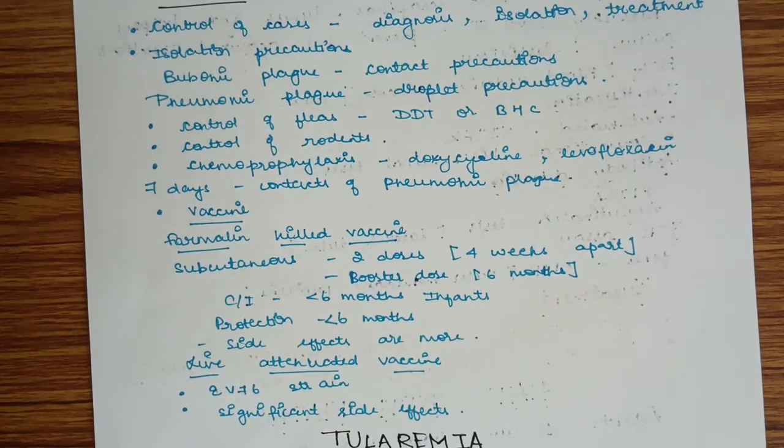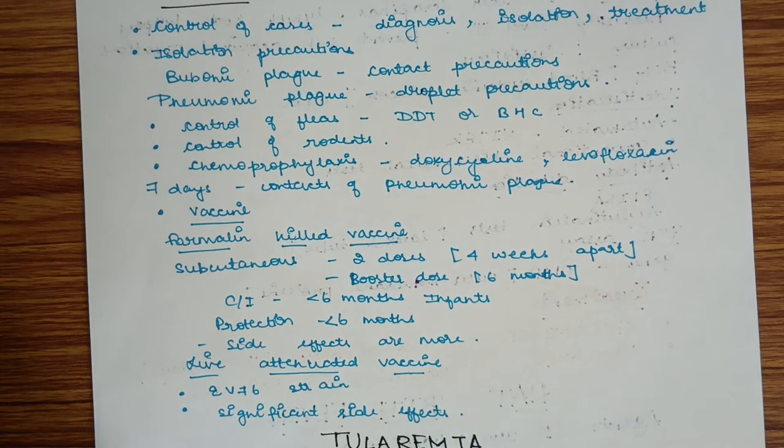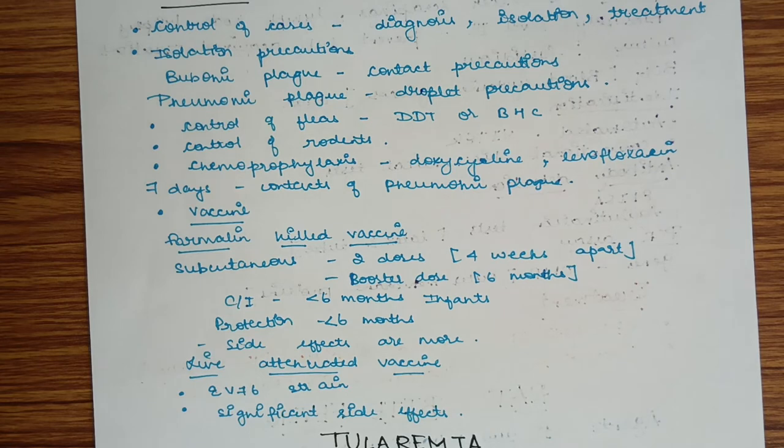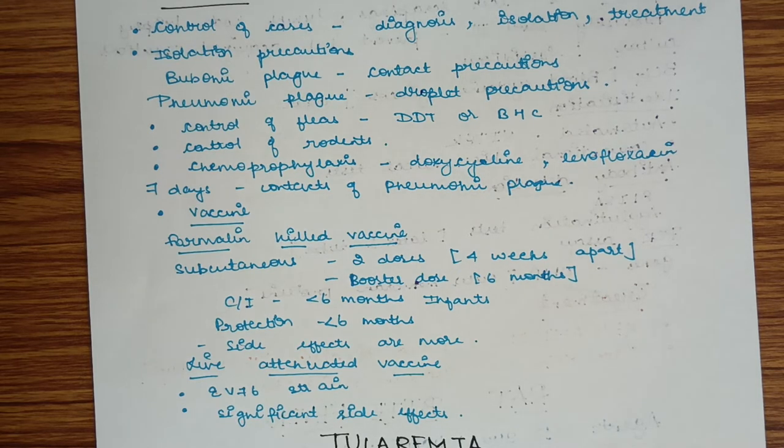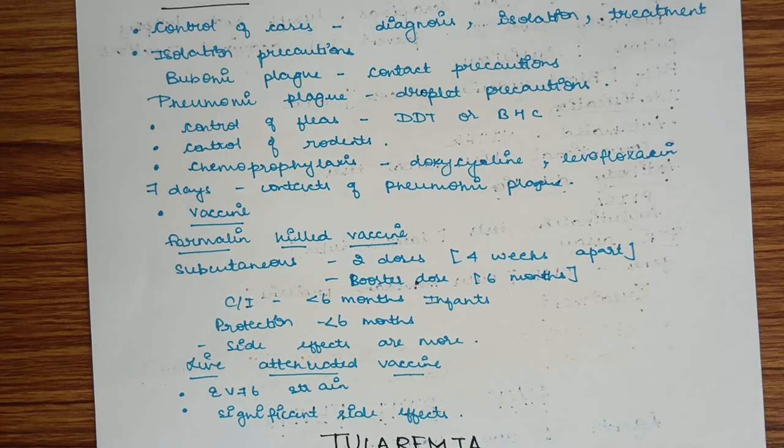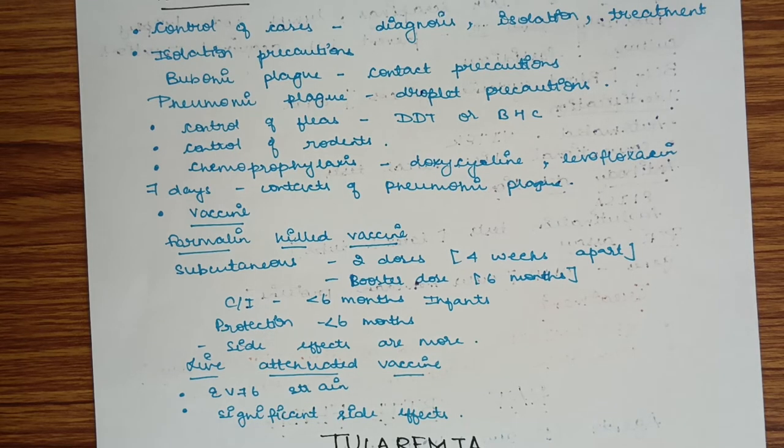Vaccines are two: formalin killed vaccine and live attenuated vaccine. Formalin killed vaccine is injected subcutaneously in 2 doses 4 weeks apart and 1 booster dose 6 months apart, totaling 3 doses. It is contraindicated in infants below 6 months, provides protection for less than 6 months, and side effects are more.